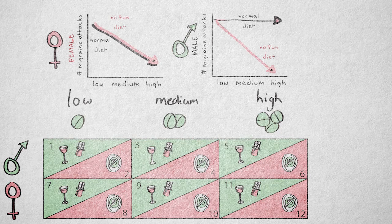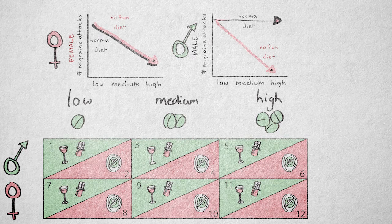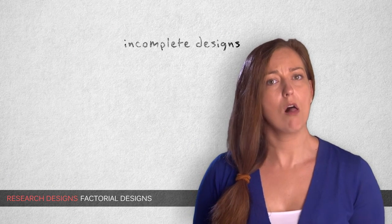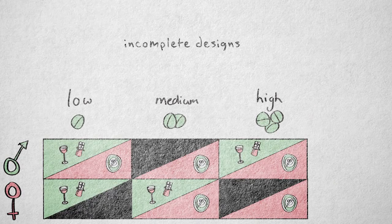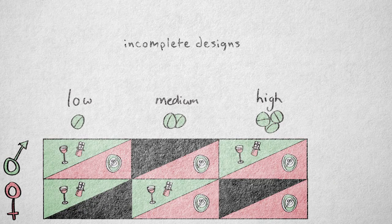Like I said, it can get pretty complicated pretty quickly. There are even more complicated factorial designs, called incomplete designs, where not all combinations of levels of the factors or cells are actually present in the design. Now, we won't go into those designs right now.